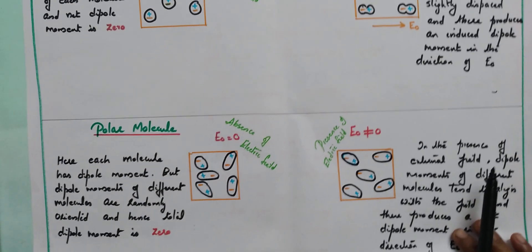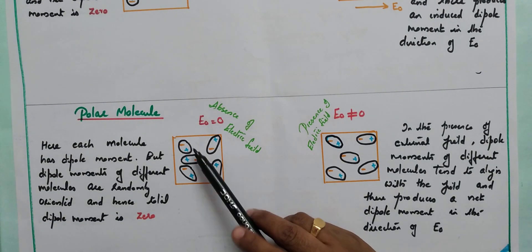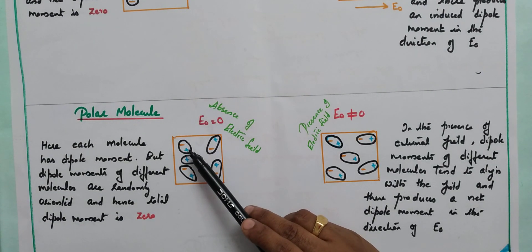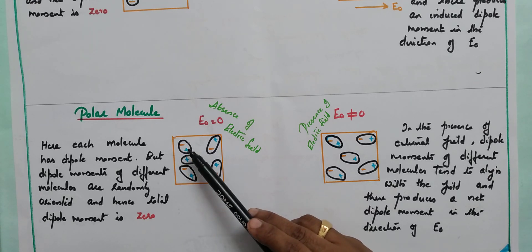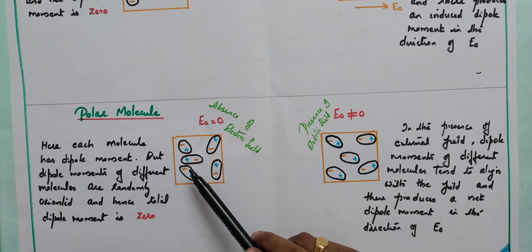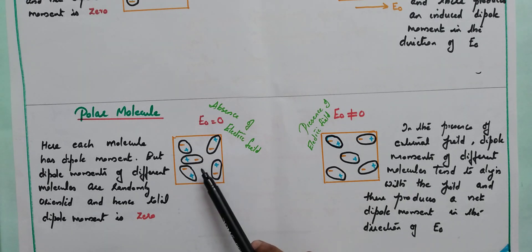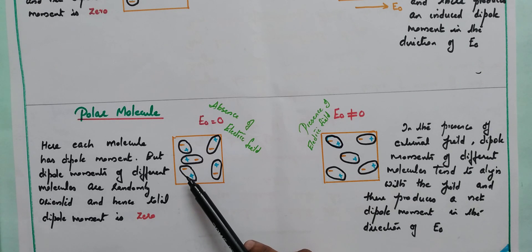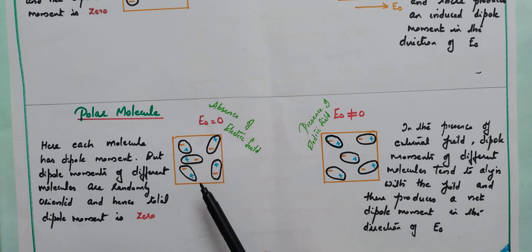Now what happens when a polar molecule is placed in an external electric field? We know that in polar molecules, positive and negative charges are already separated, so each molecule already has a dipole moment. However, these dipoles are aligned in different, random directions, and hence the net dipole moment is considered to be zero.